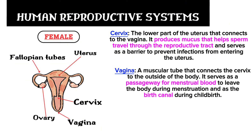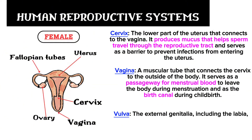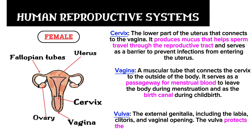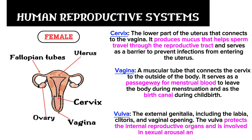Lastly, we are talking about the vulva — the external genitalia including the labia, clitoris, and vaginal opening. The vulva protects the internal reproductive organs and is involved in sexual arousal and pleasure.